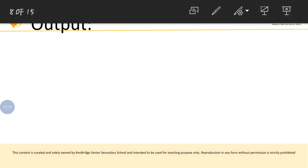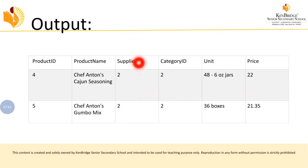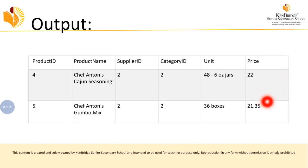Looking at the output, previously we retrieved three records with prices in range. Now we get four and five records, with product prices of 21 and 22, because we used the NOT BETWEEN operator. Whatever price is available between 10 and 20 will not be displayed in the output. That's how we can use the BETWEEN operator in SQL.